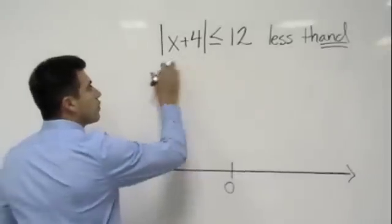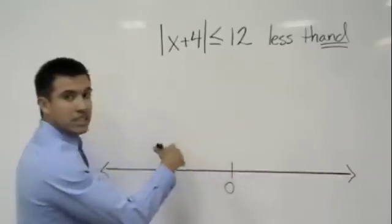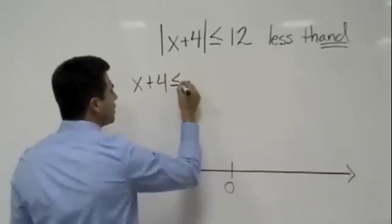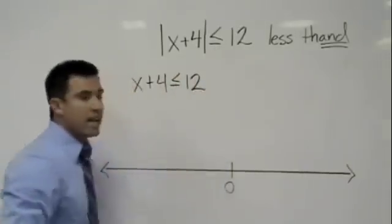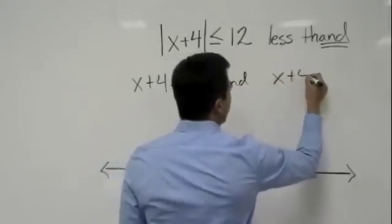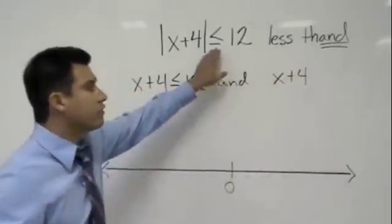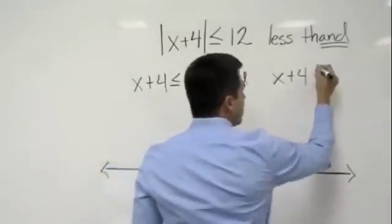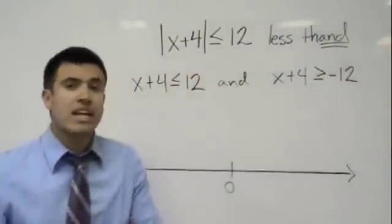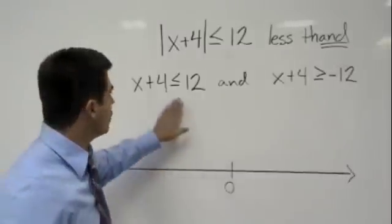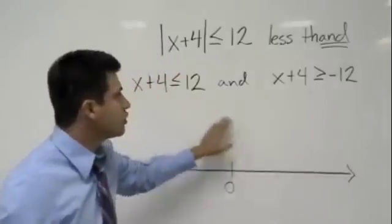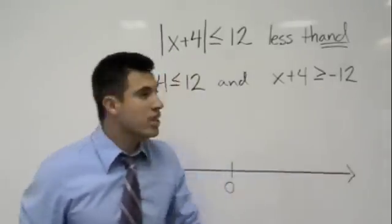Let's see if that works. We rewrite one inequality the same, just without the absolute value: x plus 4 is less than or equal to 12. And — so let's put our 'and' here — x plus 4: we flip the sign and make it the opposite, so x plus 4 is greater than or equal to negative 12. Just know that you flip the sign and make the other number the opposite — positive 12 becomes negative 12.